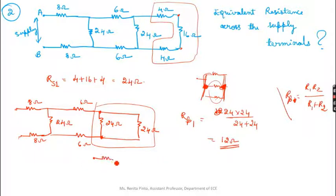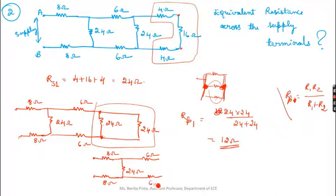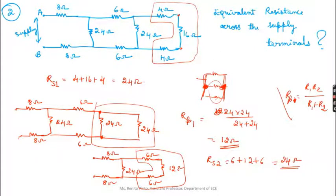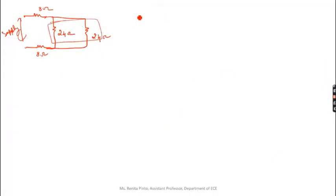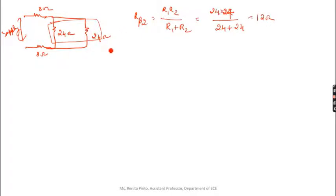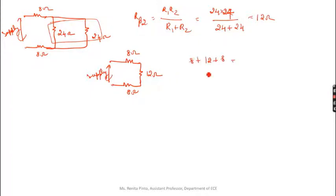Now the circuit has 8Ω, 8Ω, 24Ω, 6Ω, 6Ω, and 12Ω. The resistances 6Ω, 12Ω, and 6Ω are all in series, giving 24Ω. Next, 24Ω and 24Ω are in parallel: using R1·R2/(R1+R2) gives 12Ω. The circuit then has 8Ω, 12Ω, and 8Ω in series, giving a total of 28Ω. So the equivalent resistance R_eq = 28Ω.